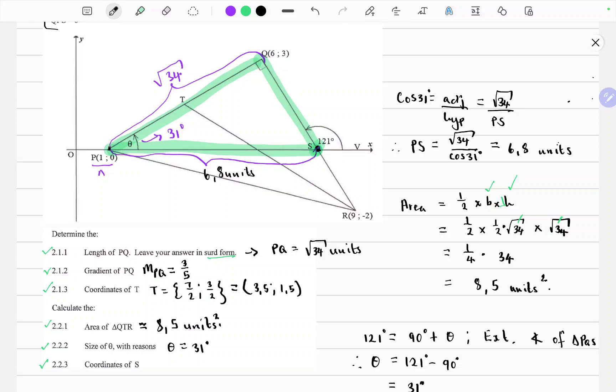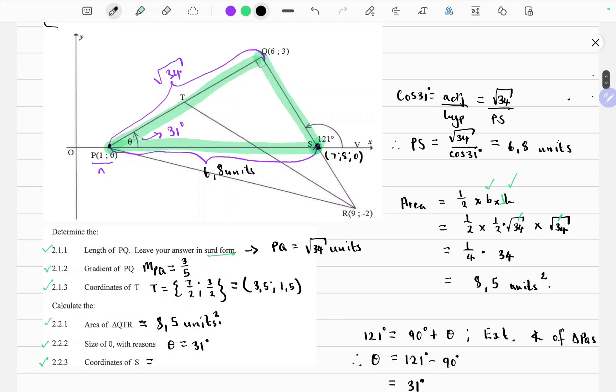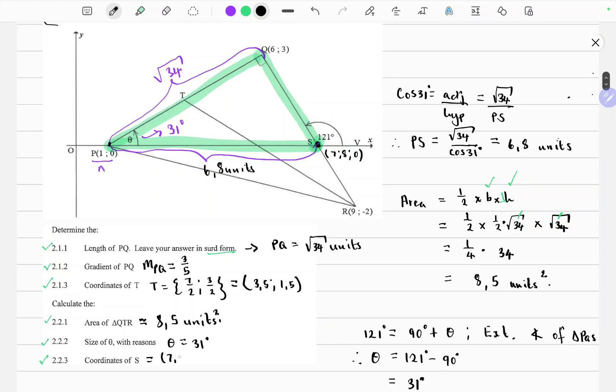So the starting point for x here is 1. So if you add 6.8, it means that the x coordinate here will be 7.8. And S lies on the x-axis, so the y coordinate is 0. So the coordinates of S are 7.8 and 0. Thank you so much for watching.